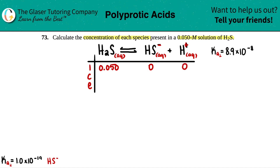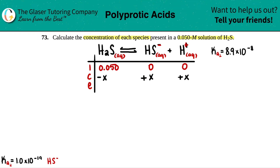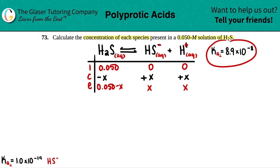C stands for change. If you spot any side that starts with nothing, you can only go up from there — the products have to increase by some value and you get rid of your starting material. We don't know by how much, so we label it X: minus X, plus X, and plus X. Acids and bases are always a one-to-one ratio, so it's always X, X, X. E stands for equilibrium — combining initials and changes: 0.050 minus X, X, and X.